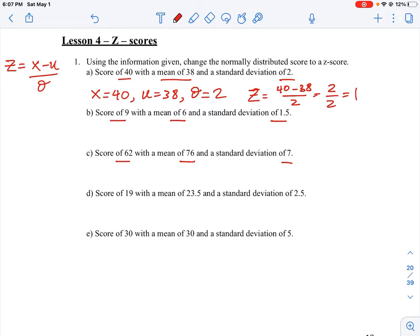So we can be positive or negative. So one of the questions here that gives you a negative value is question C. Okay, so we have X equals 62, the mean equals 76, and the standard deviation is 7.